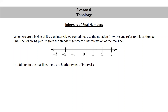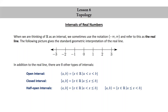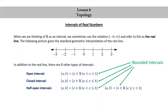In addition to the real line, there are eight other types of intervals. We have an open interval, written (a, b), which is the set of real numbers x such that a < x < b. We have a closed interval, written [a, b], which is the set such that a ≤ x ≤ b. We have two half-open intervals: (a, b], the set where a < x ≤ b, and [a, b), the set where a ≤ x < b. These four types of intervals are known as bounded intervals.